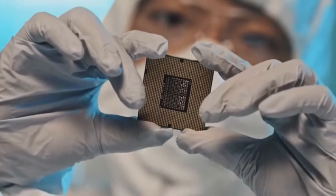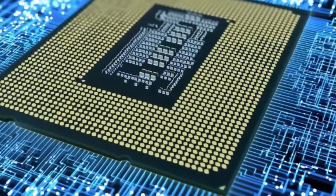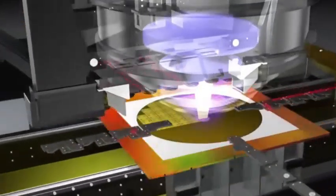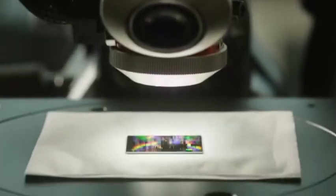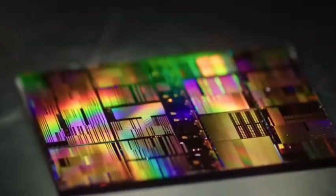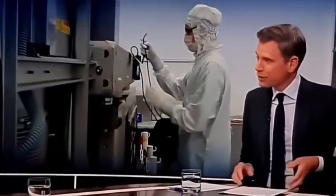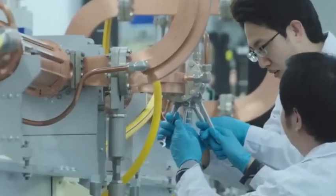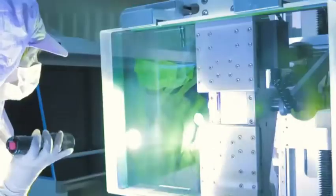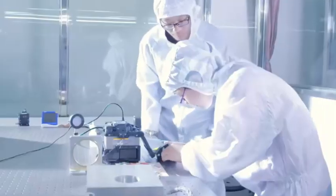EUV means extreme ultraviolet light. The wavelength of this light is very short, only about 13.5 nanometers, which is much shorter than the light people usually see. Why use such a short light? Because the circuits on the chip are getting smaller and smaller. If you want to carve precise patterns in these tiny spaces, you have to use light with a shorter wavelength. It's like painting. If you want to draw finer lines, you have to use a thinner pen.